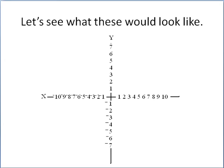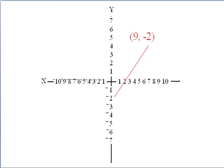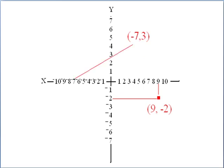We'll take a look at the expanded Cartesian coordinate system with x and y both being positive and negative. For the ordered pair (9, -2), we have x is 9, y is -2. That gives us the location of the red dot at (9, -2). For (-7, 3), we have x is -7 and y is positive 3, which gives us the location of the dot at that ordered pair.